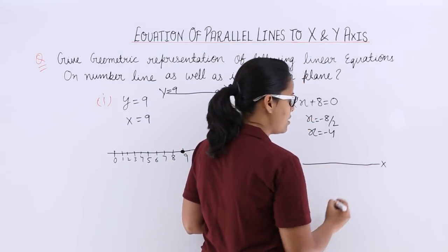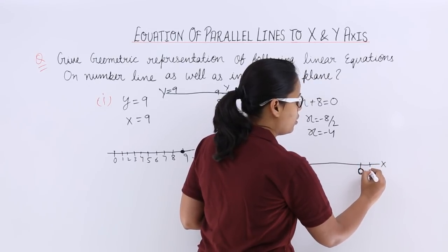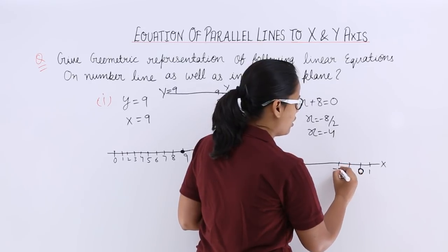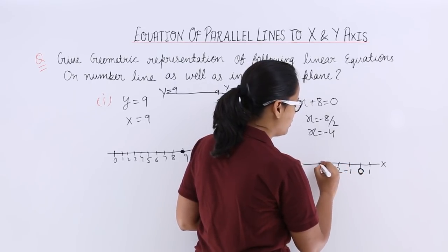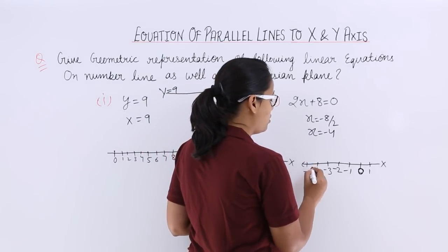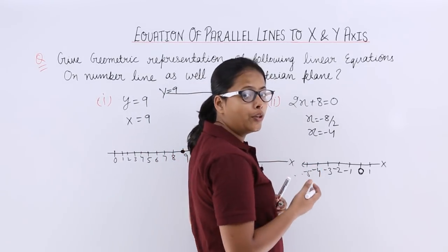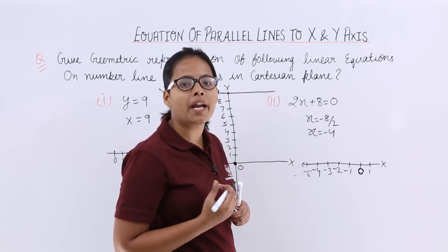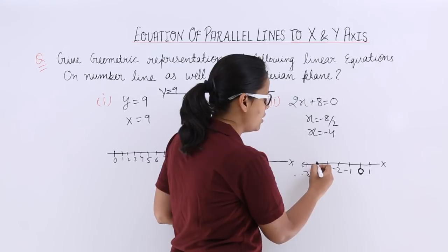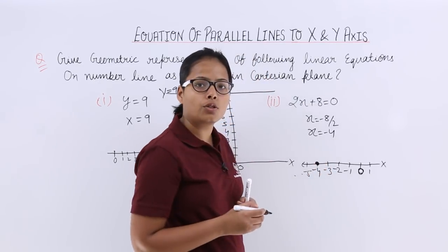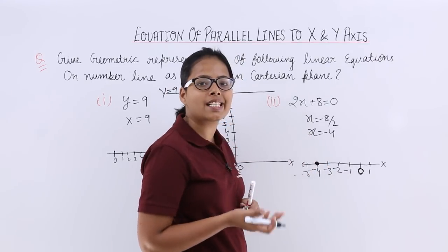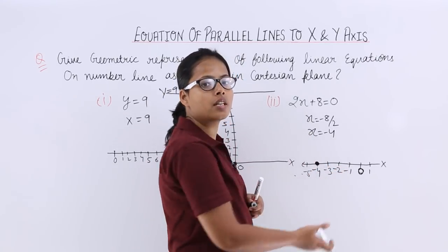This is the x axis. Suppose this is the origin. Here will be the positive points on the x axis. I am drawing negative points on this side, minus 5 and so on. What you need to locate here is x is equal to minus 4. You can see here x is equal to minus 4 — here it is. You just need to mark this point which is x is equal to minus 4 on this number line.